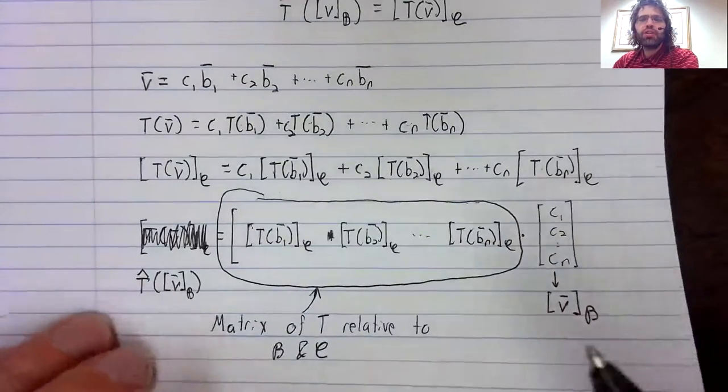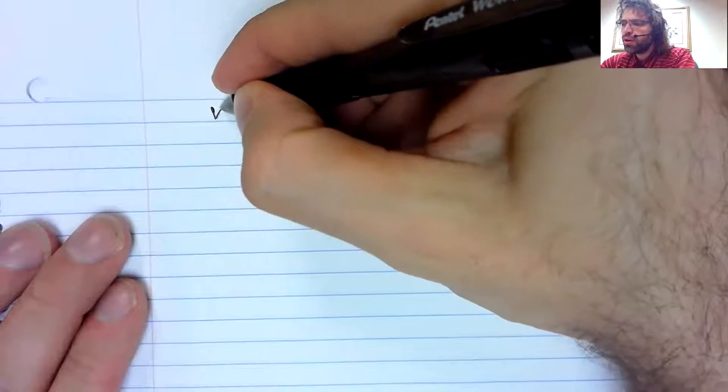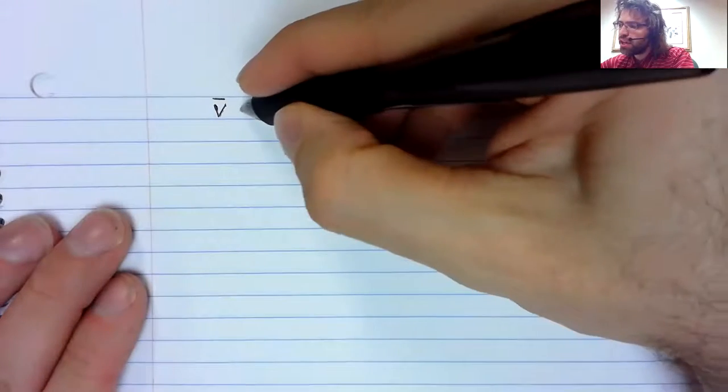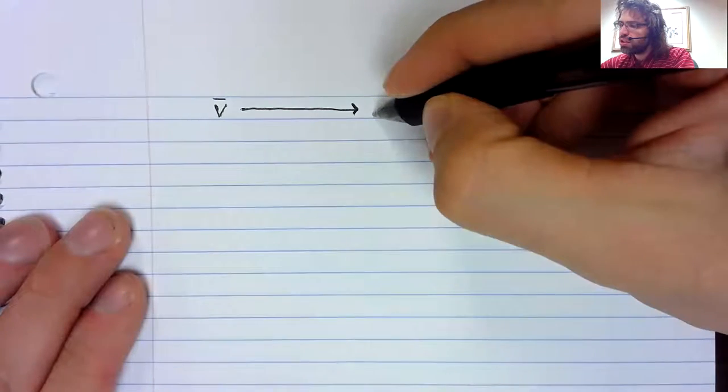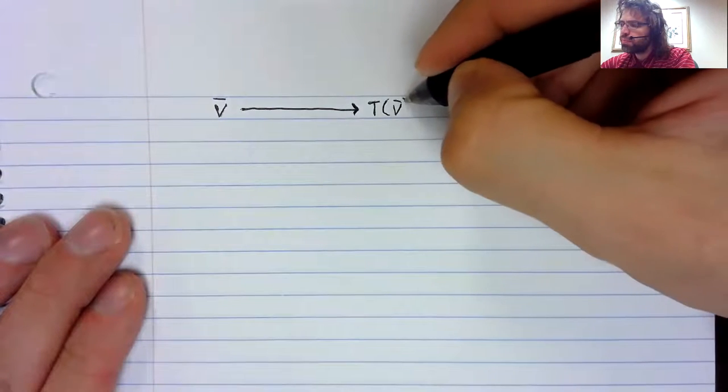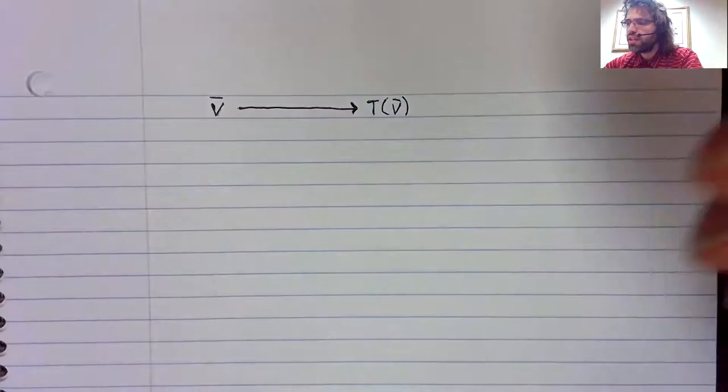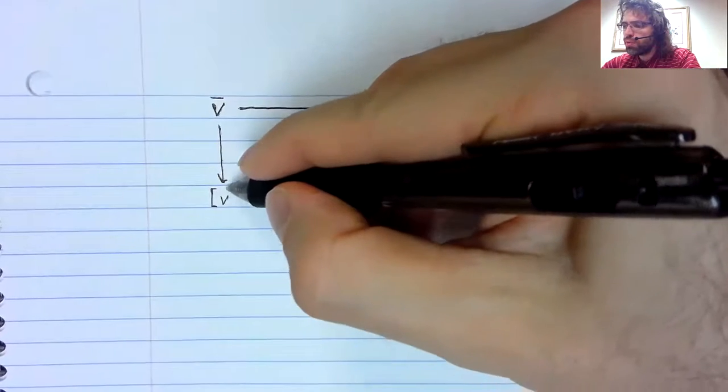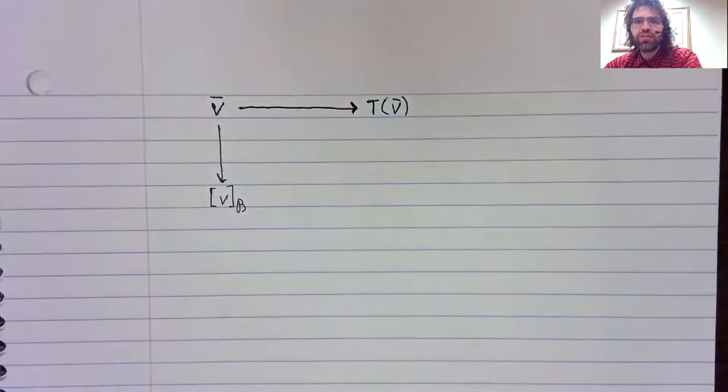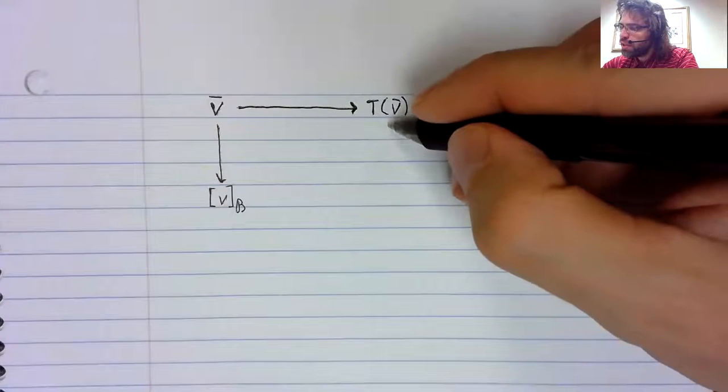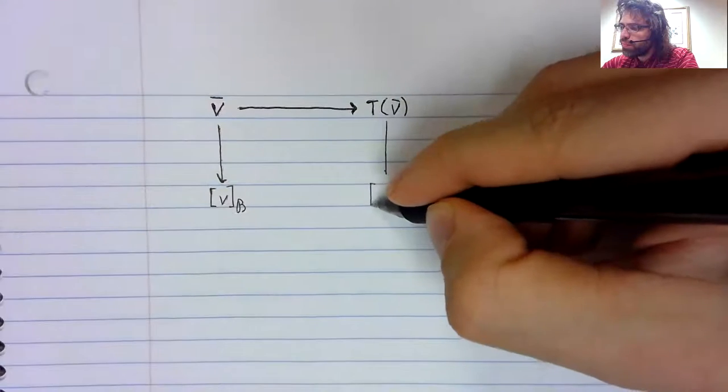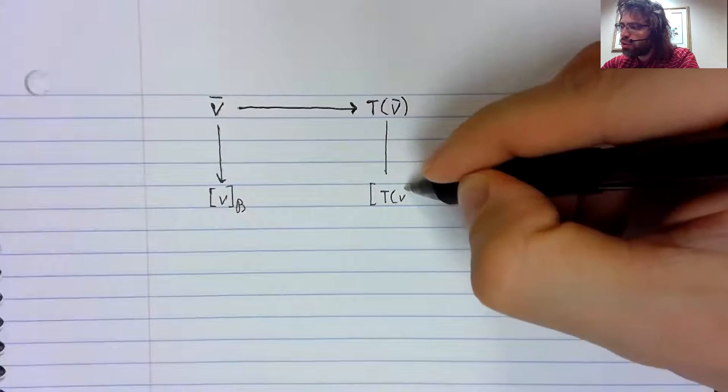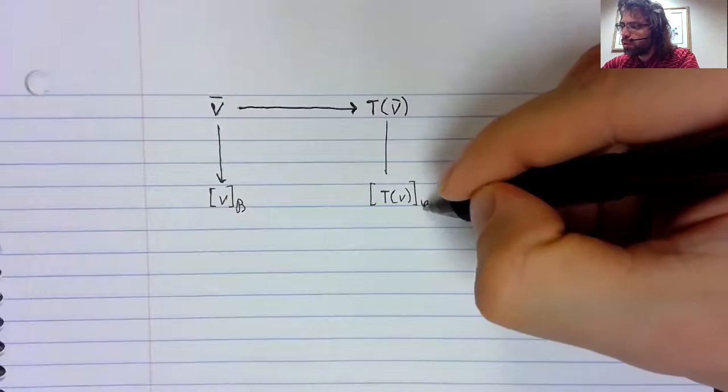In conclusion, then, say that we have a vector V and we've got this linear transformation. T of V. Now V is identical to its isomorphic image. T of V is identical to its isomorphic image.